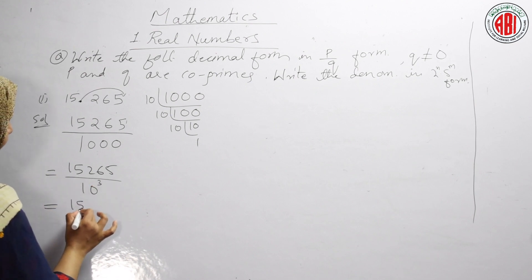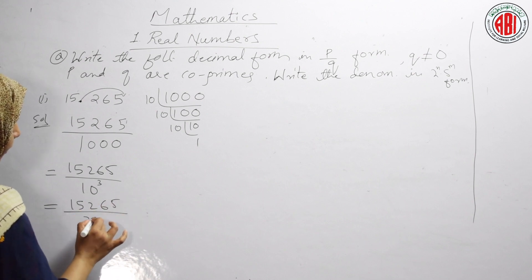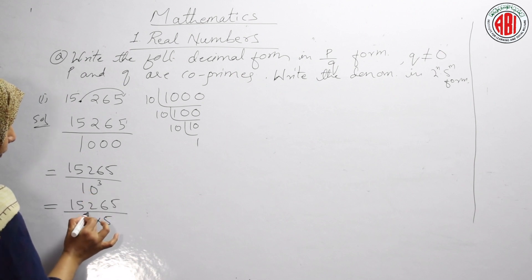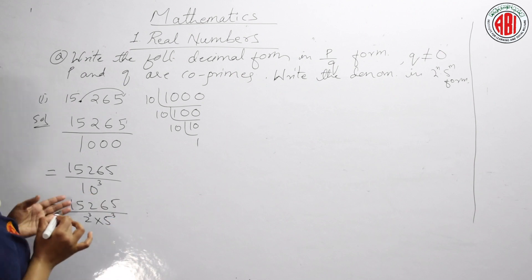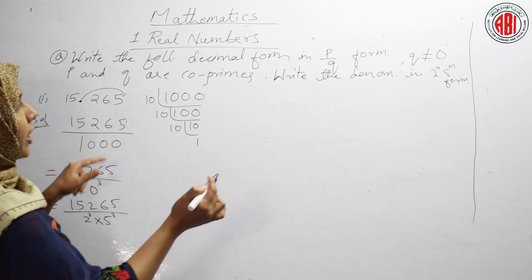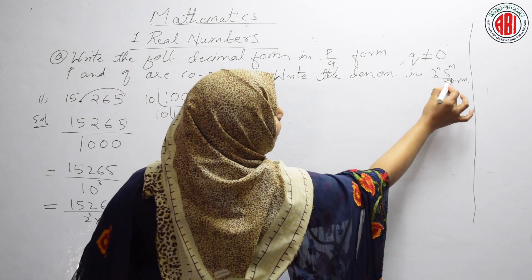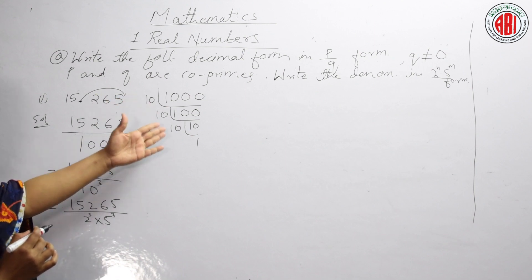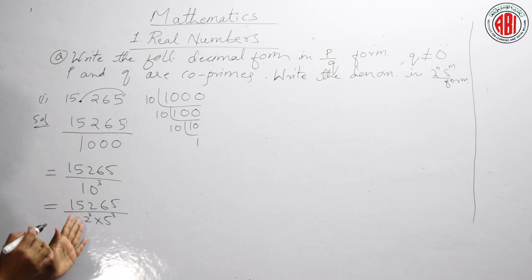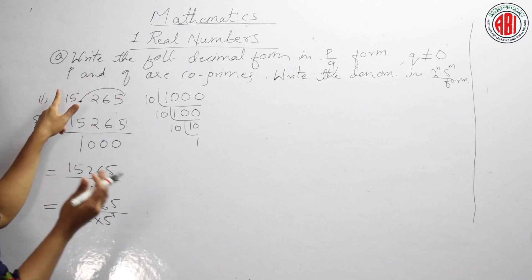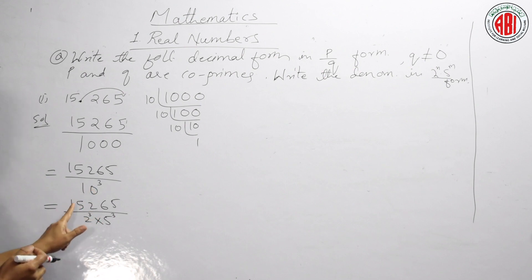10³ we can write as (2 × 5)³, which equals 2³ × 5³. So the P/Q form of 15.265 is 15265/(2³ × 5³). The question also asks to write the denominator in the form 2ⁿ × 5ᵐ. We have factorized and got 10³ = 2³ × 5³. Therefore, this decimal number is written as 15265/(2³ × 5³), confirming it is a terminating decimal.